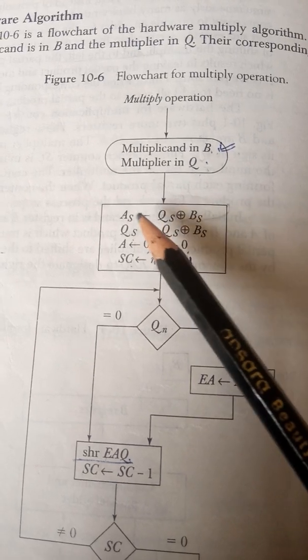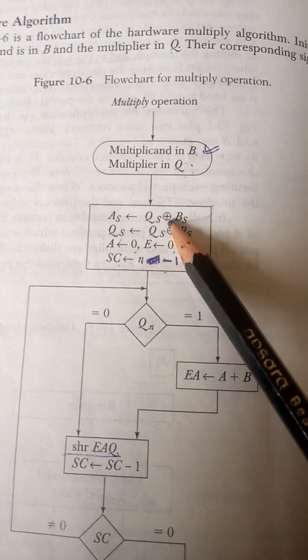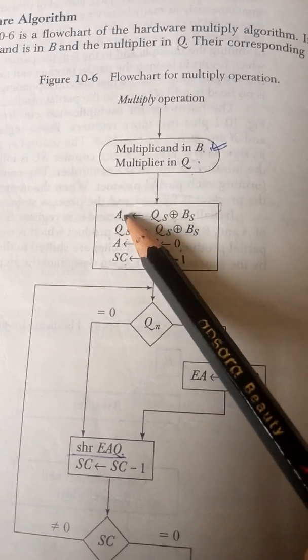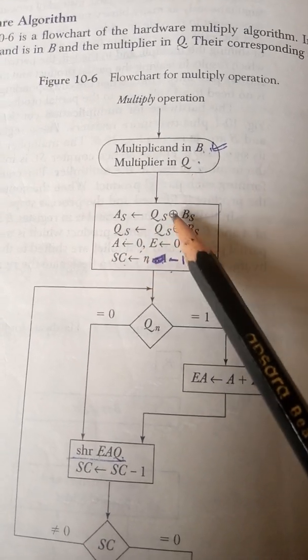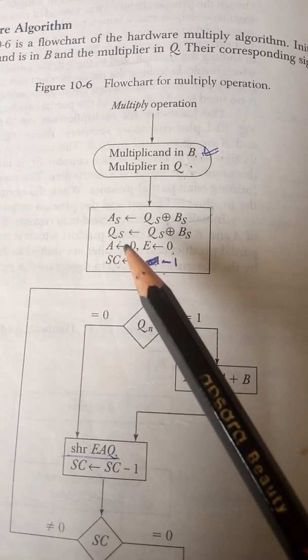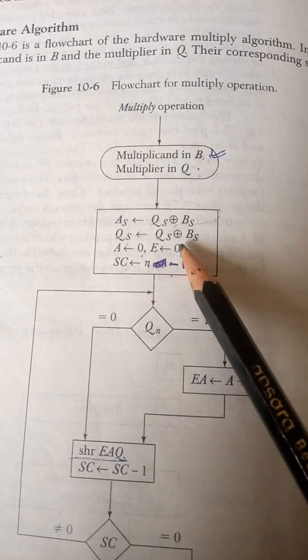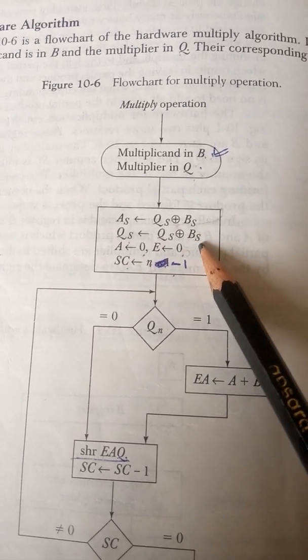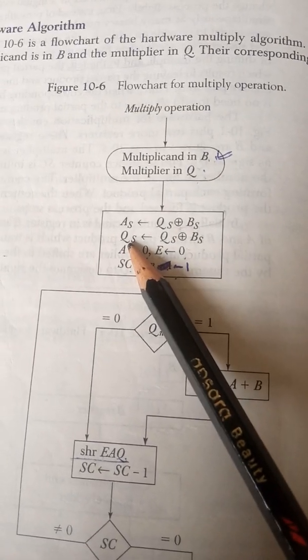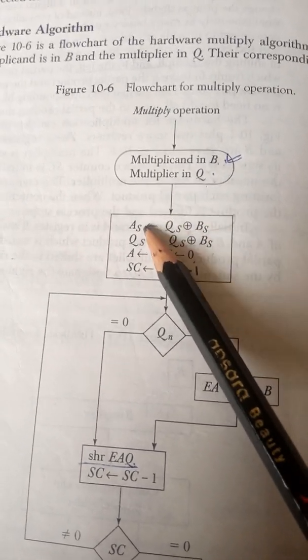Multiplicand and multiplier sign bit, if they are same or they are not same. If they are same, that means positive result. So QS XOR BS will be zero. If both are same, then result will go to AS, that is positive. Otherwise it will be negative, one will be stored in this. Now you see that QS also have QS and BS, that means the sign bit of QS is also altered after deciding the sign bit of result.